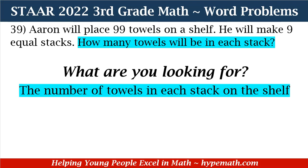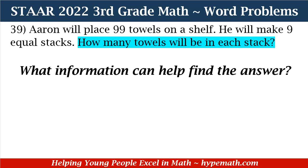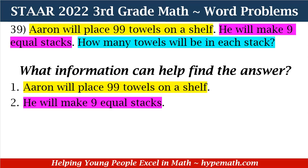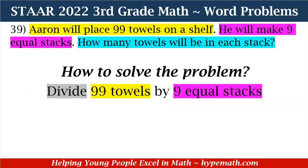Now that we know what we're looking for, the next thing we need to solve is what information can help us find the answer. The information that can help us is: number one, Aaron will place 99 tiles on the shelf, and number two, he will make nine equal stacks. Now that we have the information we need, we need to solve the problem. We are going to divide 99 tiles by nine equal stacks.